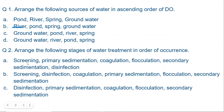The first step in water treatment is screening, followed by primary sedimentation. Coagulation means adding a coagulant, and flocculation means forming and growing flocs so they settle down. Then secondary sedimentation occurs in a settling tank. Finally, the water is disinfected and supplied. So option A is the correct answer. Make sure you remember these stages.